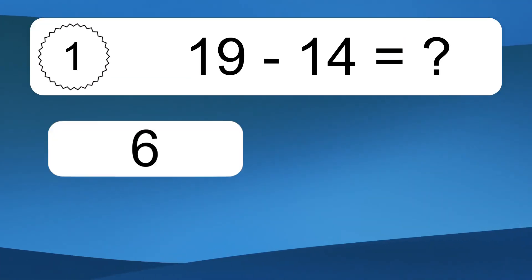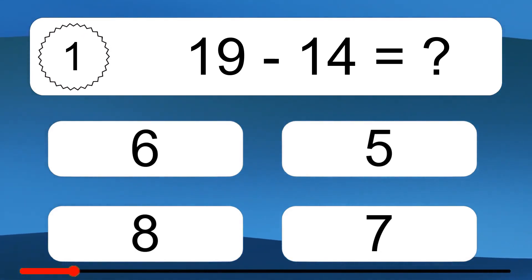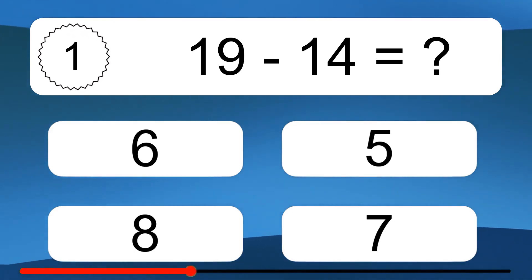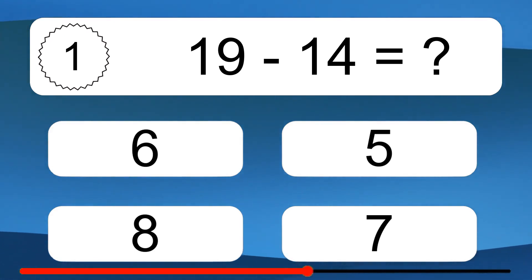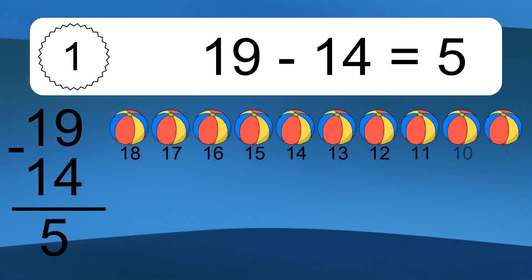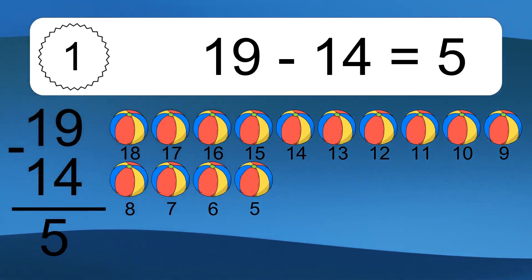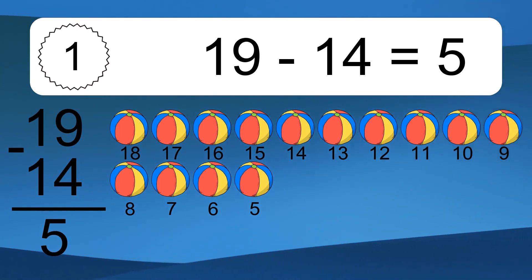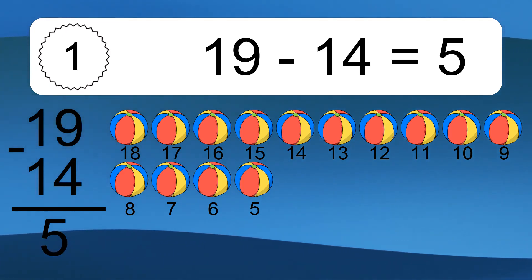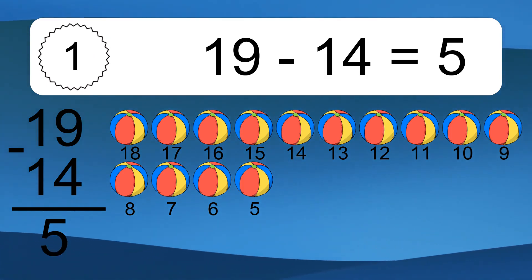19 minus 14 equals what? 19 minus 14 equals 5. Let's count it: 18, 17, 16, 15, 14, 13, 12, 11, 10, 9, 8, 7, 6, 5.